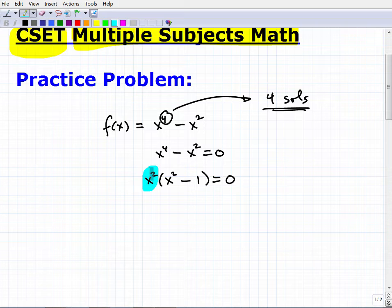I have this being multiplied by this. If I told you, hey, I have two things being multiplied by one another and the answer is zero, what does that tell you about one of the things? Well, one of them has to be zero or both have to be zero. So this is a real big advantage to be able to factor something when we're solving when the equation's equal to zero. I can say x² = 0 and x² - 1 = 0.